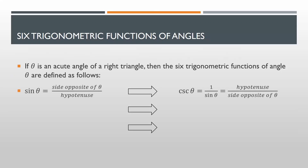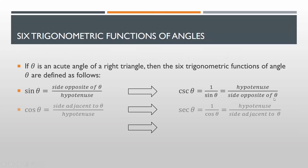Sine theta is equal to the side opposite of theta over hypotenuse. Cosecant theta is equal to 1 over sine theta, so that will be equal to hypotenuse over side opposite of theta. Next, we have cosine theta, which is equal to the side adjacent to theta over hypotenuse. And secant theta is equal to 1 over cosine theta, so that will be equal to hypotenuse over side adjacent to theta.